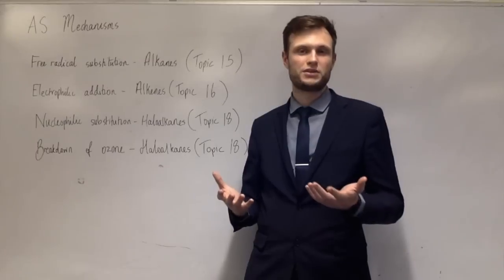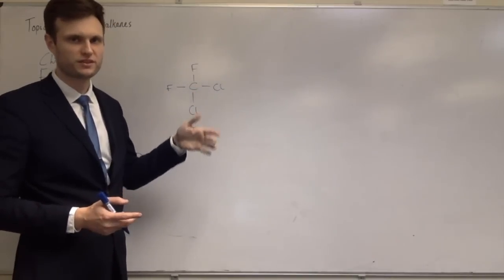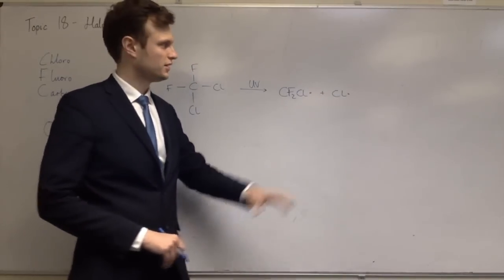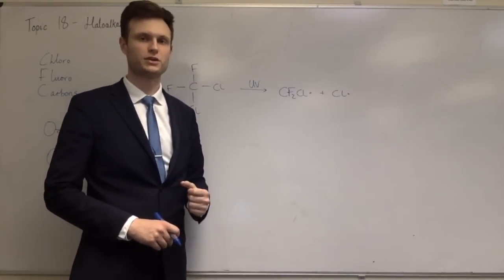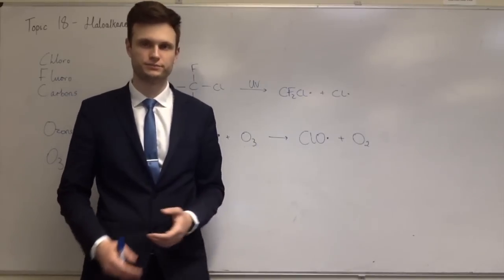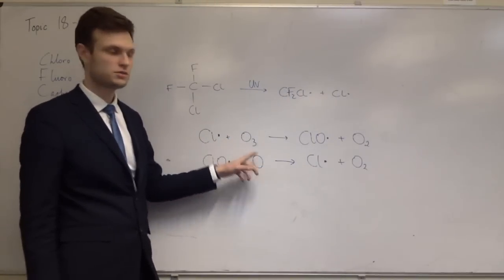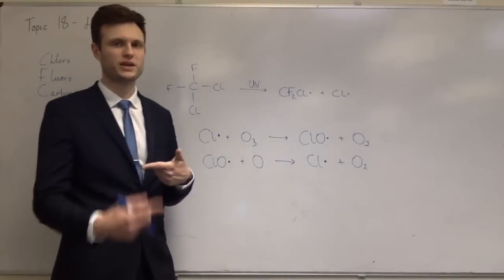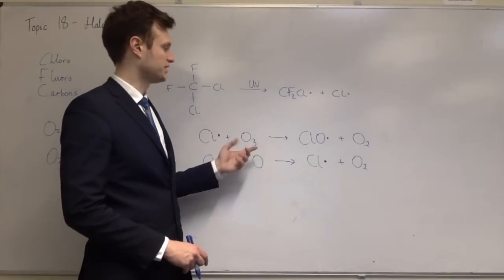The final mechanism is the catalytic breakdown of ozone. Ultraviolet light hits a CFC, breaking the carbon-chlorine bond homolytically to produce a chlorine radical and a CF2Cl radical — this is how chlorine radicals are produced in the stratosphere. The chlorine radical reacts with an ozone molecule to make a ClO radical and O2. That ClO radical then reacts with an oxygen atom to regenerate the chlorine radical and another O2 molecule. The chlorine radical is used and remade repeatedly — around 100,000 catalysed reactions before it terminates — so it is catalytic in nature and could convert all ozone to oxygen.